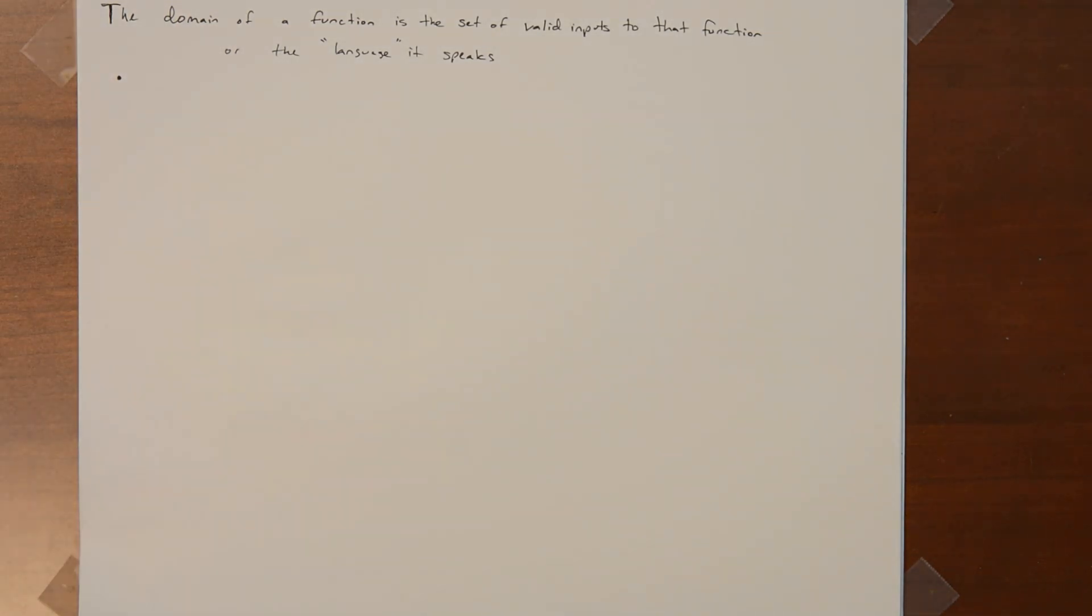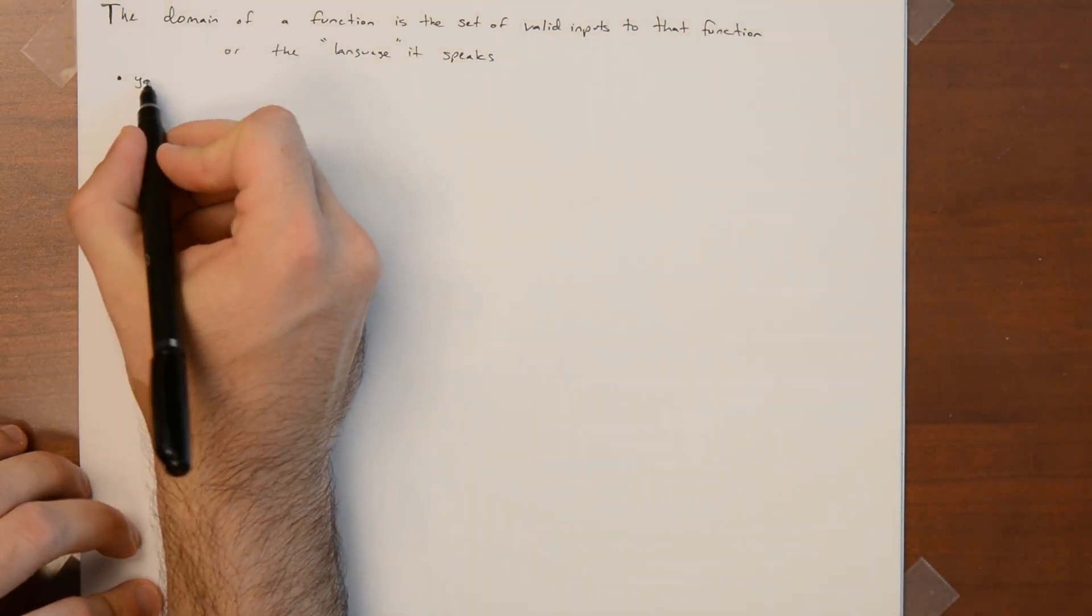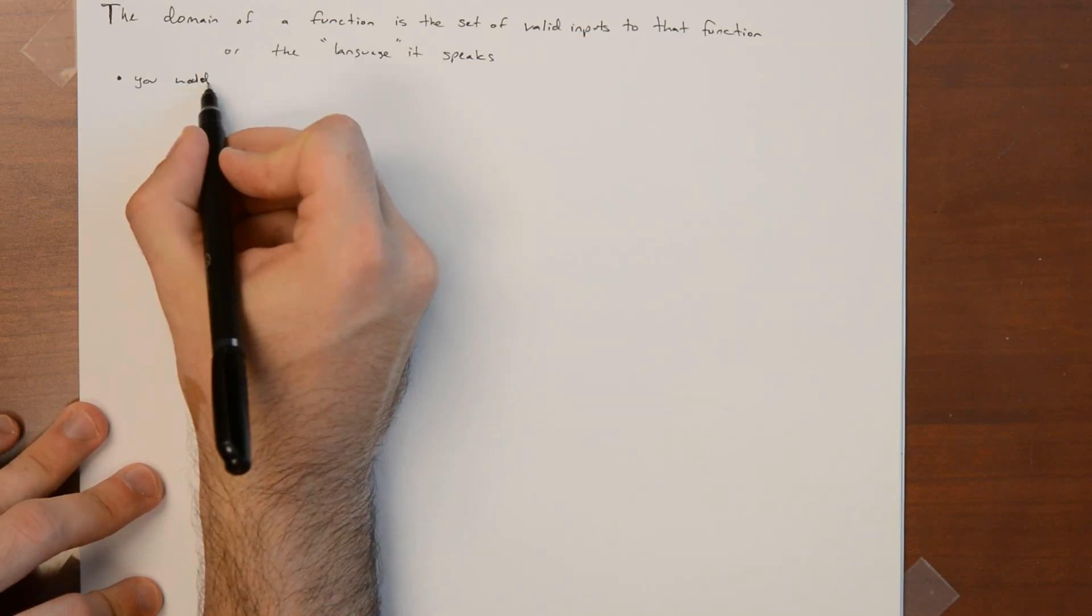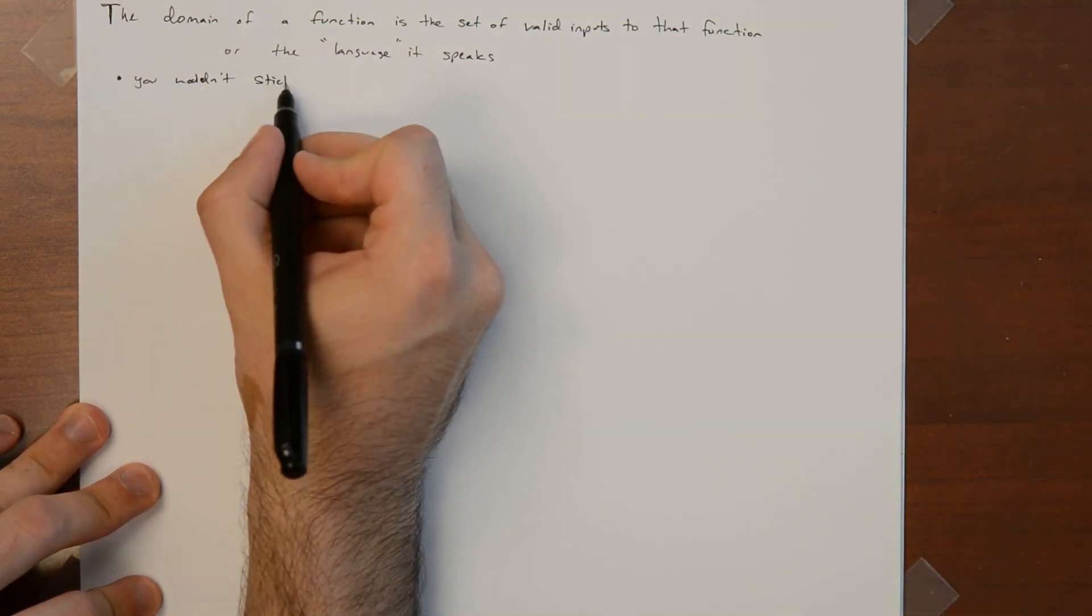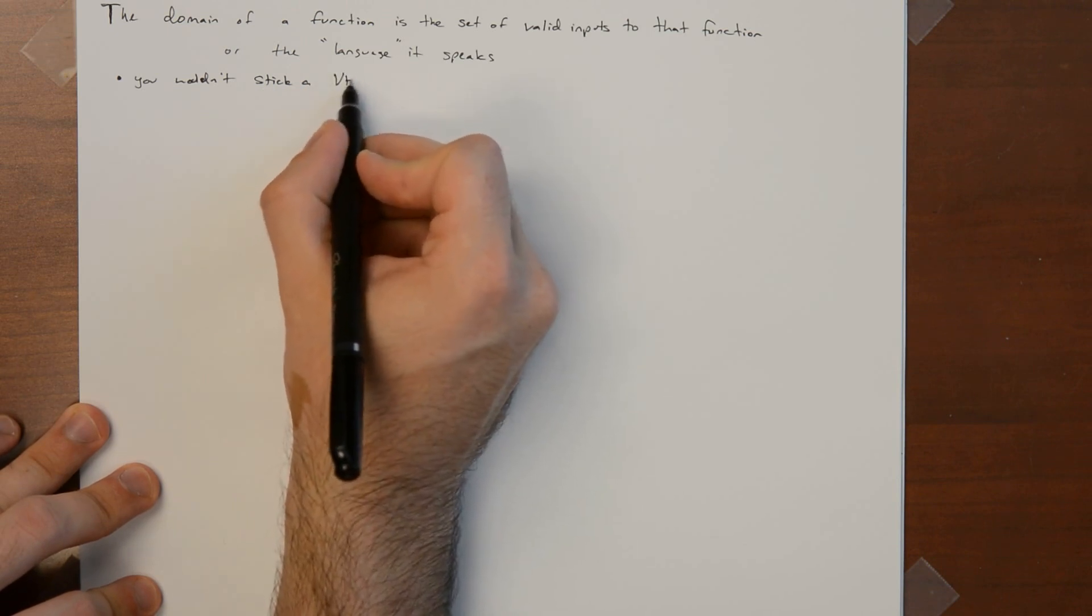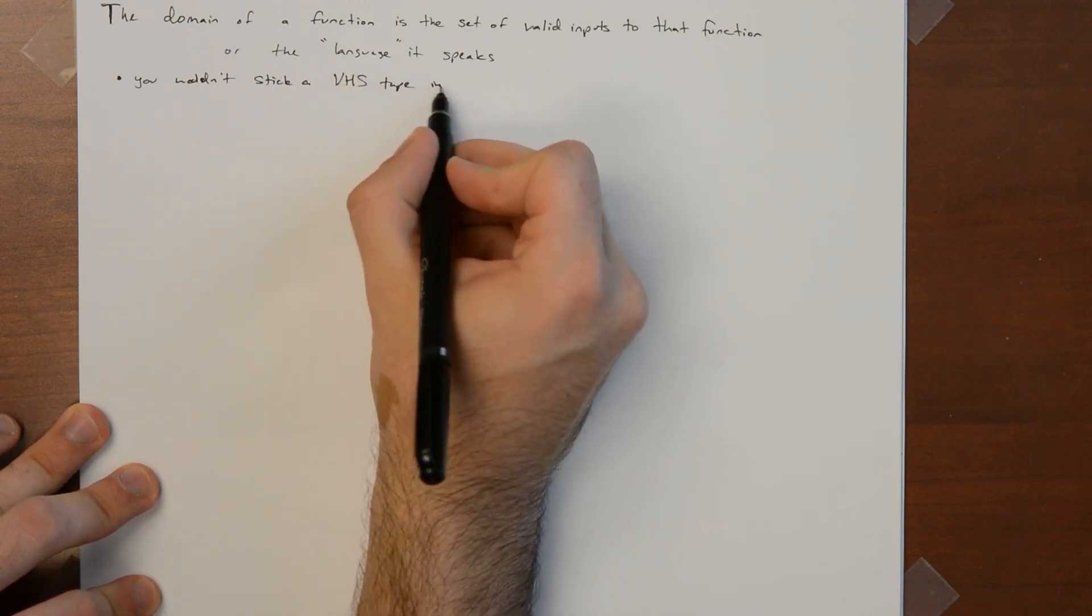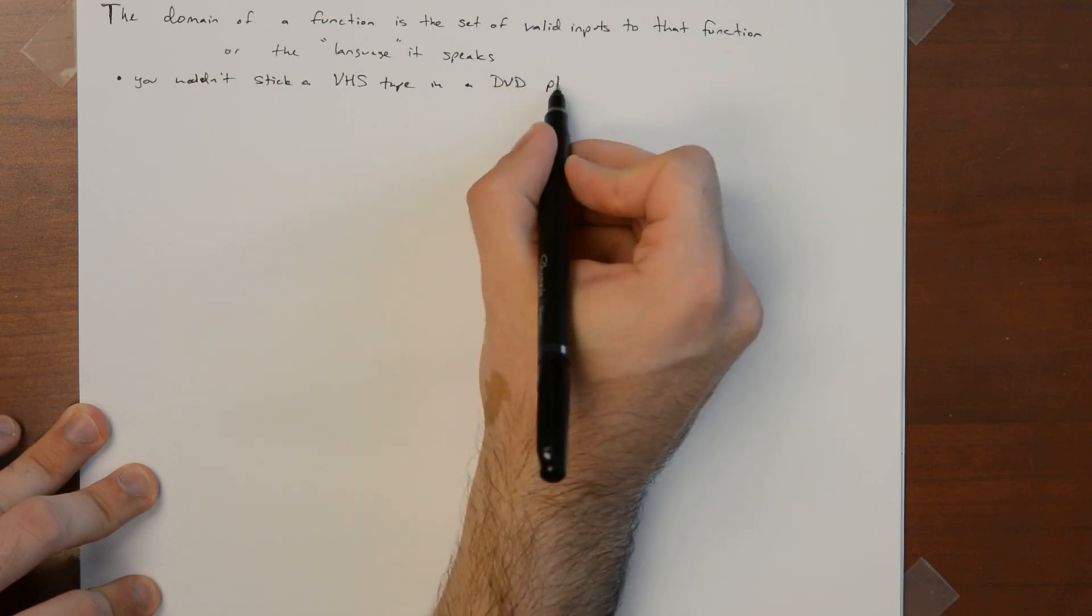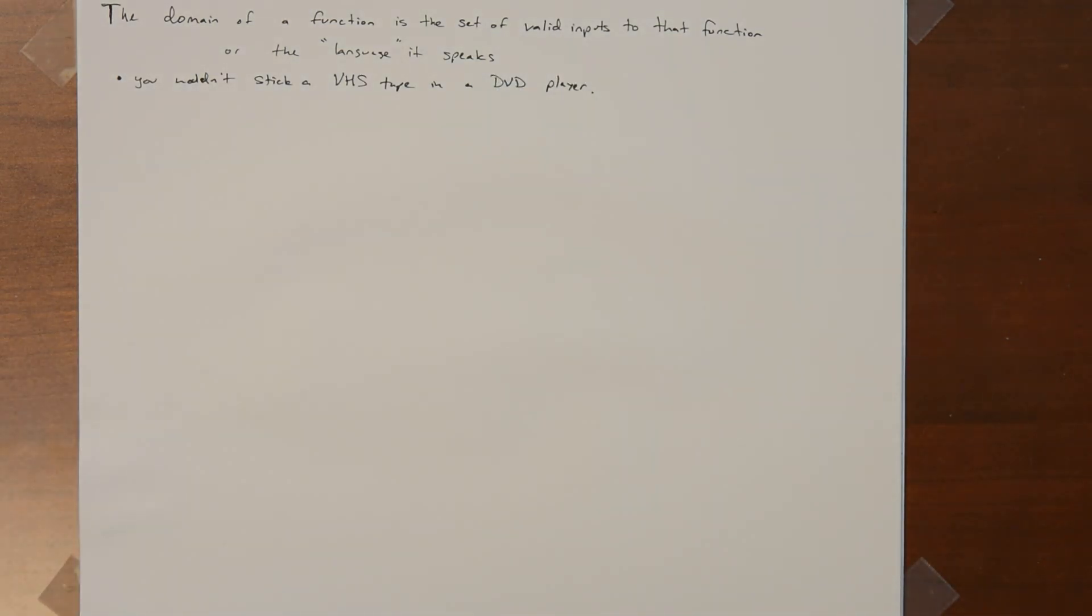It's a function and it doesn't understand things that are not phrased as DVDs. You can't stick a VHS tape into a DVD player. And it's the same as saying you would never divide by zero. But this is a statement about domain, that the function that sends x to 1 over x doesn't make sense if you try to plug in zero.